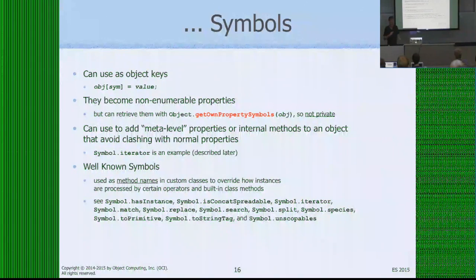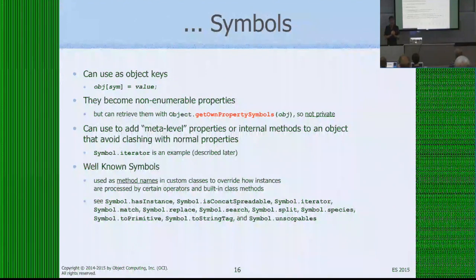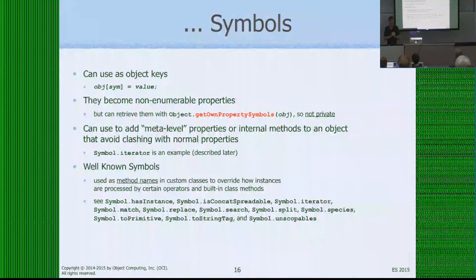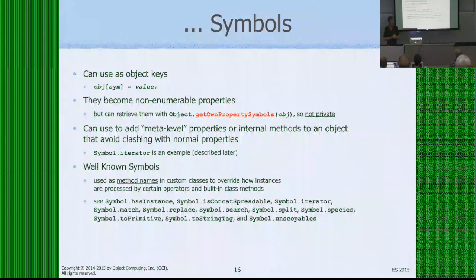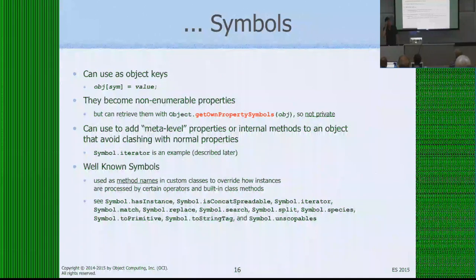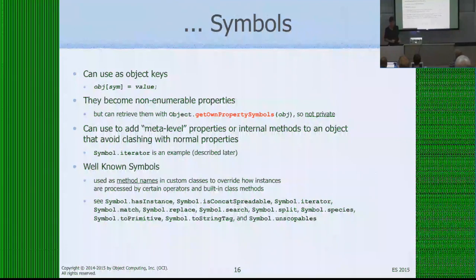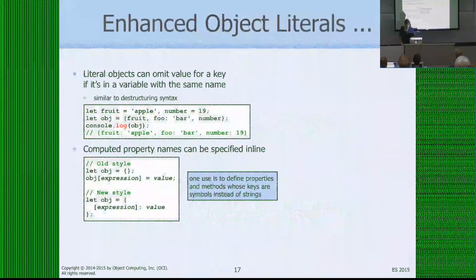The great thing about symbols is that if you come up with a new magical behavior any object can have as long as it has a special method, you don't need to worry that the method name is already used — there's no way it could have been, because symbols are unique. Rather than saying 'write a method called foo and I'll do this special thing,' you say 'here's a symbol, create a method whose name is this symbol,' and there are no chances for collisions.